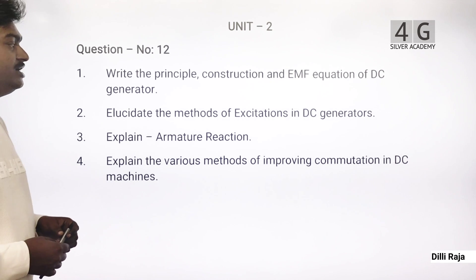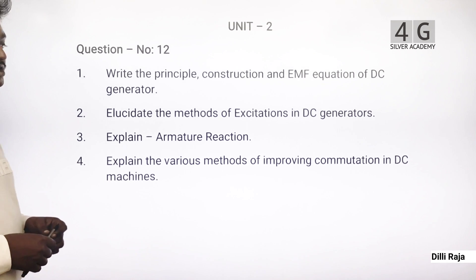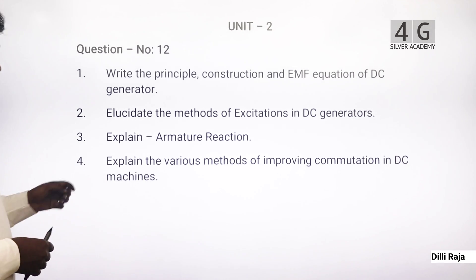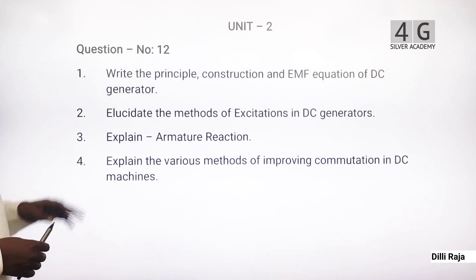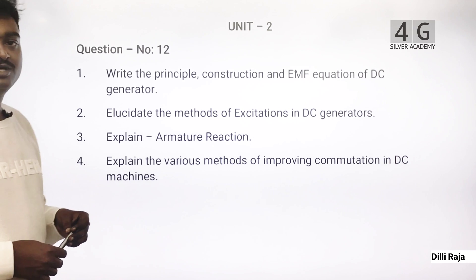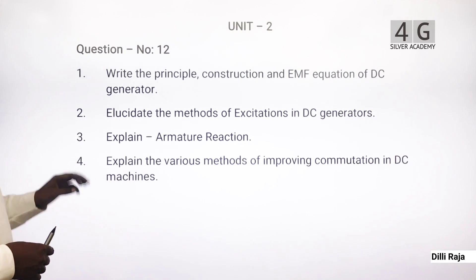Second: Elucidate the methods of Excitations in DC generators. Third: Explain Armature Reaction. Fourth: Explain the various methods of improving commutation in DC machines. These four questions cover Unit 2, worth 13 marks total.